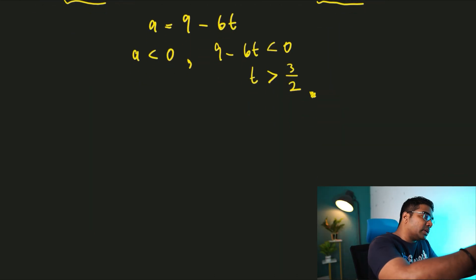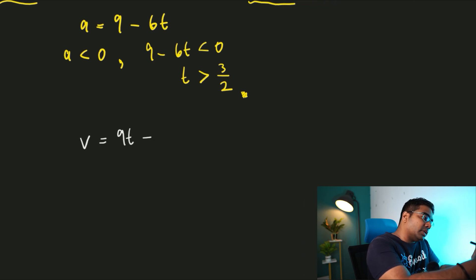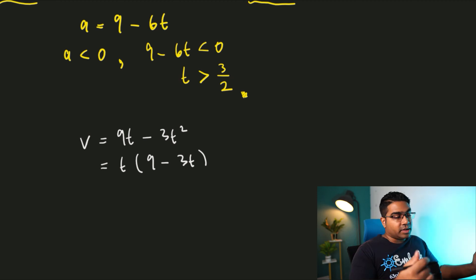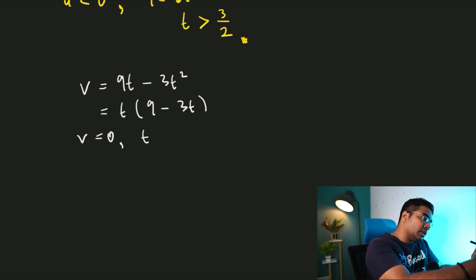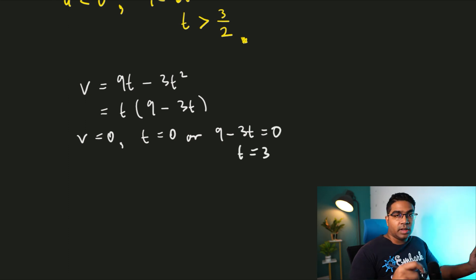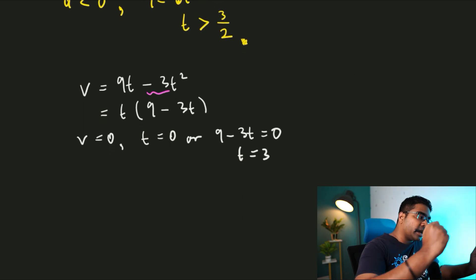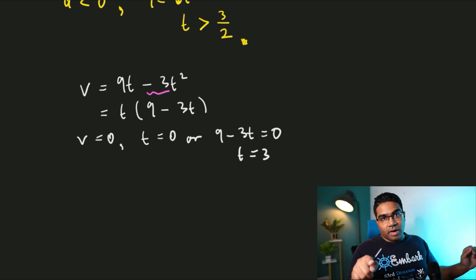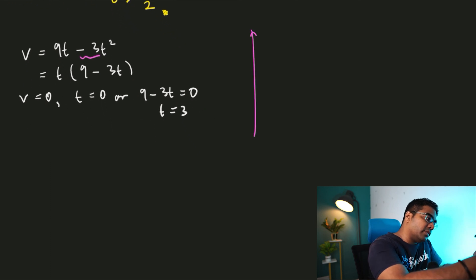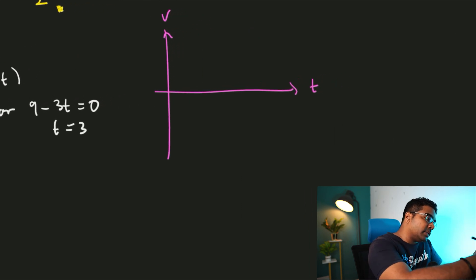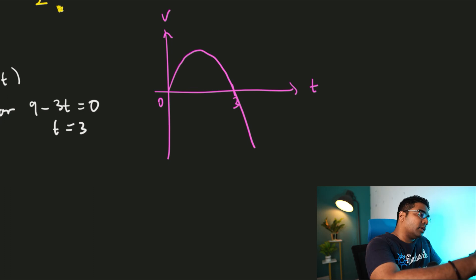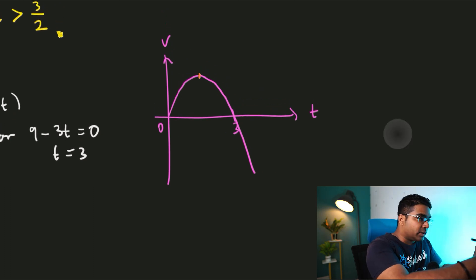So how do we check this? We just need to do a quick sketch of the velocity. Our velocity function is v = 9t minus 3t squared. Factorizing gives t(9 minus 3t). We can find the times where velocity is 0: t = 0 or 9 minus 3t = 0, meaning t = 3. Now we can sketch. The coefficient of t squared is negative, so this is a frown-shaped parabola. Sketching v against t, we have x-intercepts at 0 and 3, with the maximum at t = 3/2.